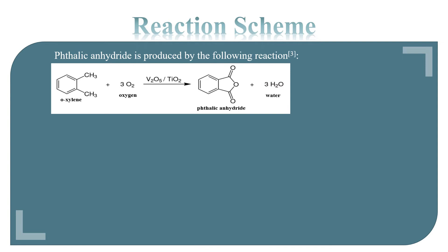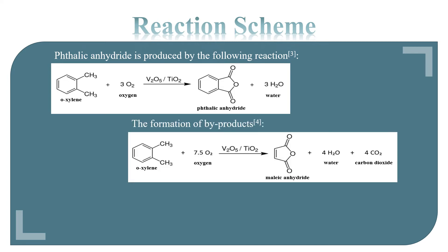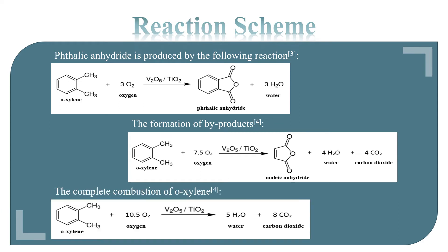Phallic anhydride is produced by the following reaction: oxaline reacts with oxygen using vanadium pentoxide or titanium dioxide as catalyst to produce phallic anhydride and water. The formation of by-products is malic anhydride with water and carbon dioxide. The complete combustion of oxaline produces water and carbon dioxide.